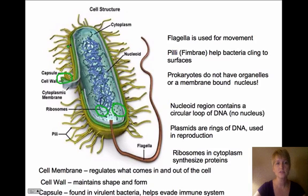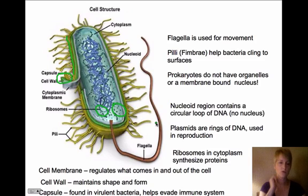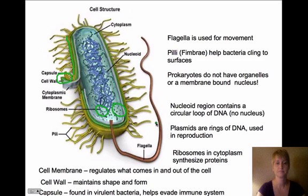We also see a capsule — another layer around the cell. The capsule is really important to bacteria that make us sick because it is what helps the bacteria evade our immune system.